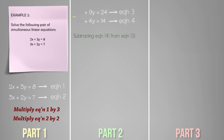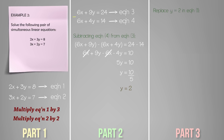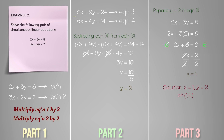Now we can see that subtracting both equations will eliminate the x terms: 6x plus 9y minus (6x plus 4y) equals 24 minus 14. Expanding the brackets gives 6x plus 9y minus 6x minus 4y equals 10. The x terms cancel, leaving 5y equals 10, so y equals 2. Substituting y equals 2 into equation 1: 2x plus 6 equals 8, so 2x equals 2 and x equals 1. Our solution is x equals 1 and y equals 2.